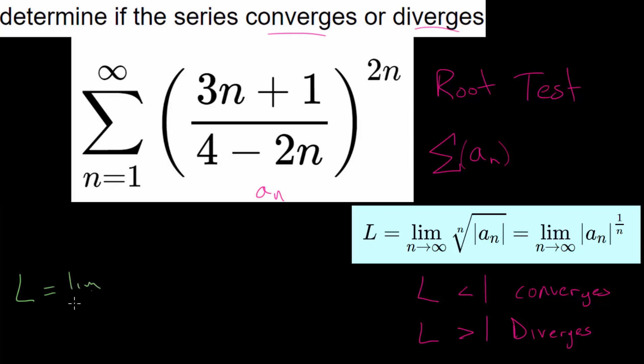So L would be this limit as n goes to infinity of the absolute value of our term here, or our sequence, 3n plus 1 over 4 minus 2n. And we're raising all of this to the 2n power. And we can put our 1 over n on the inside of the absolute value. We will raise all of this to the 1 over n power and then close that absolute value. And since we have an exponent to an exponent, we will multiply these and the n's will cancel out.